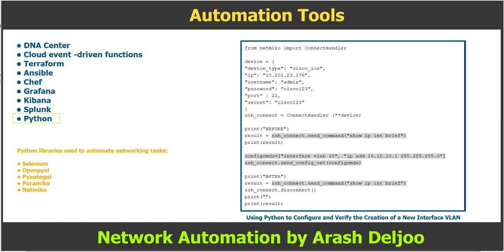The next automation tool is Python. Although Python is not an automation tool itself, it provides the building blocks to make an automation tool. Many of the automation tools described in this video are actually built using Python — for example, Ansible. Other programming languages could also be used for automation, but Python has a lot of pre-built libraries that make it a perfect candidate.